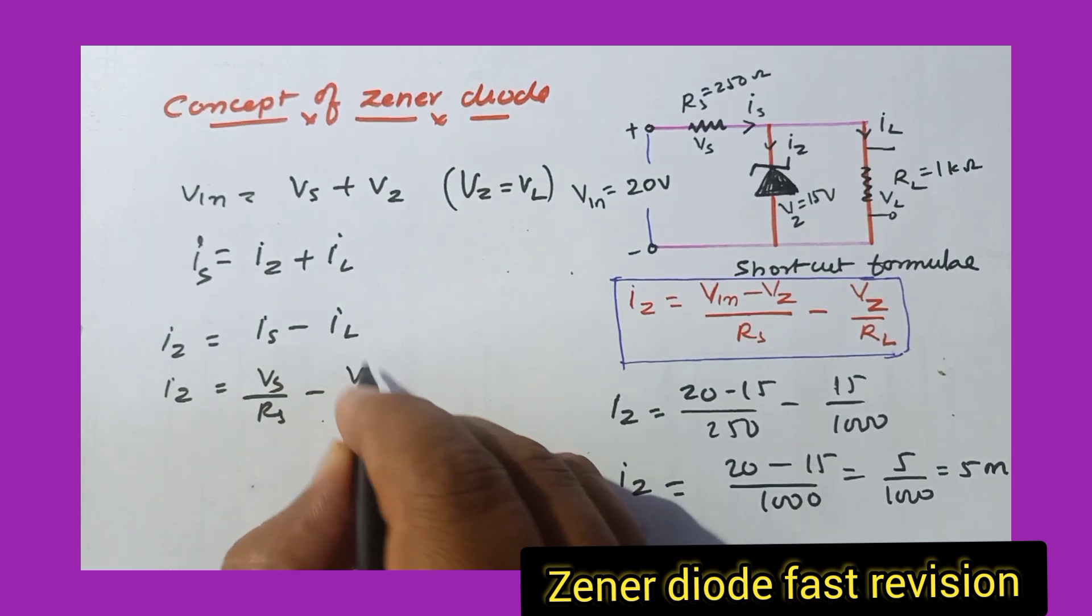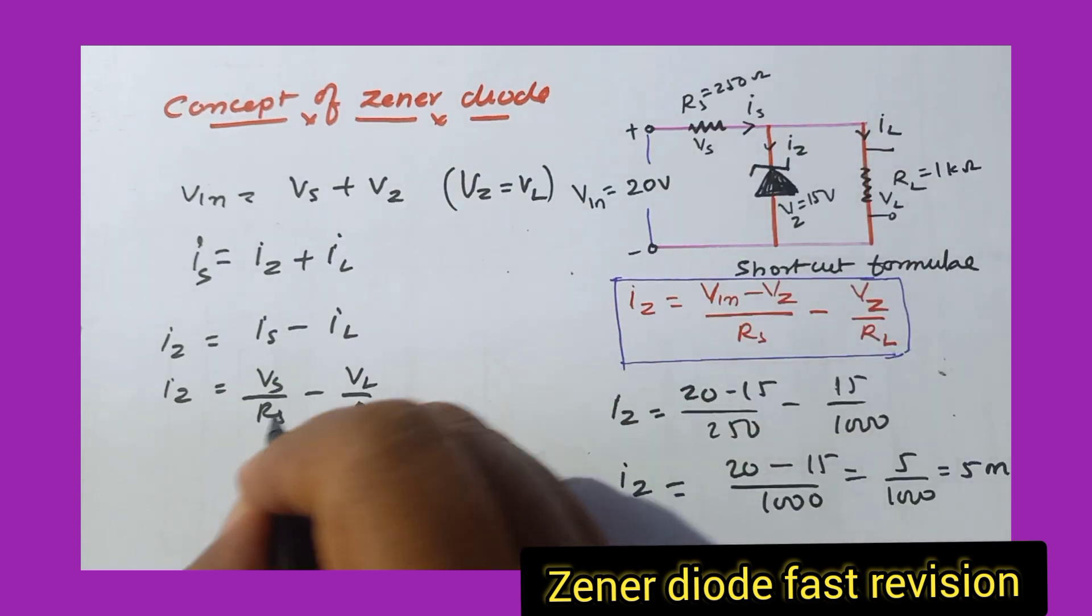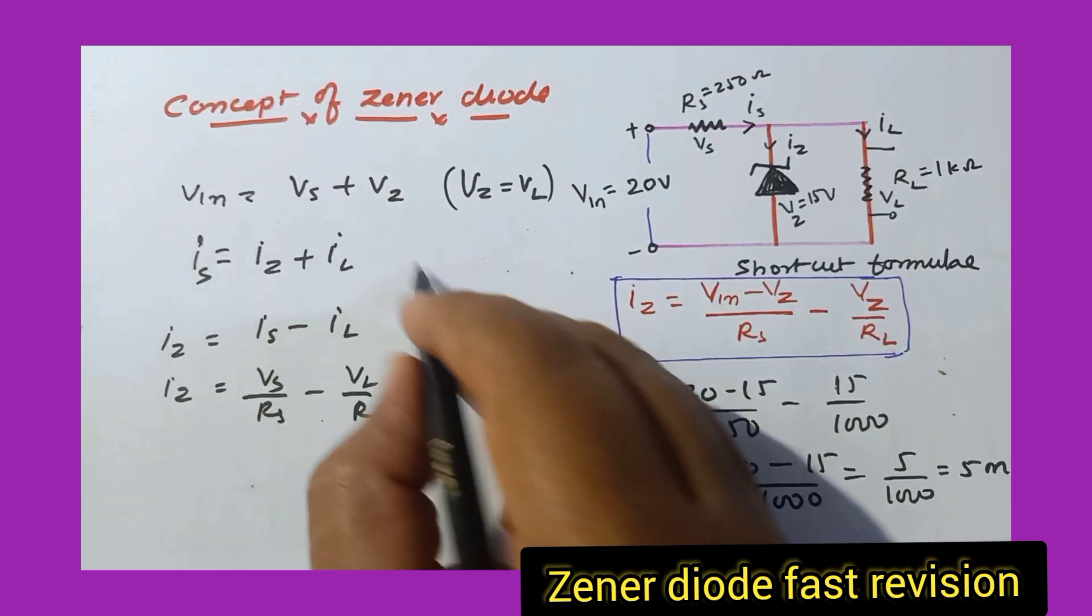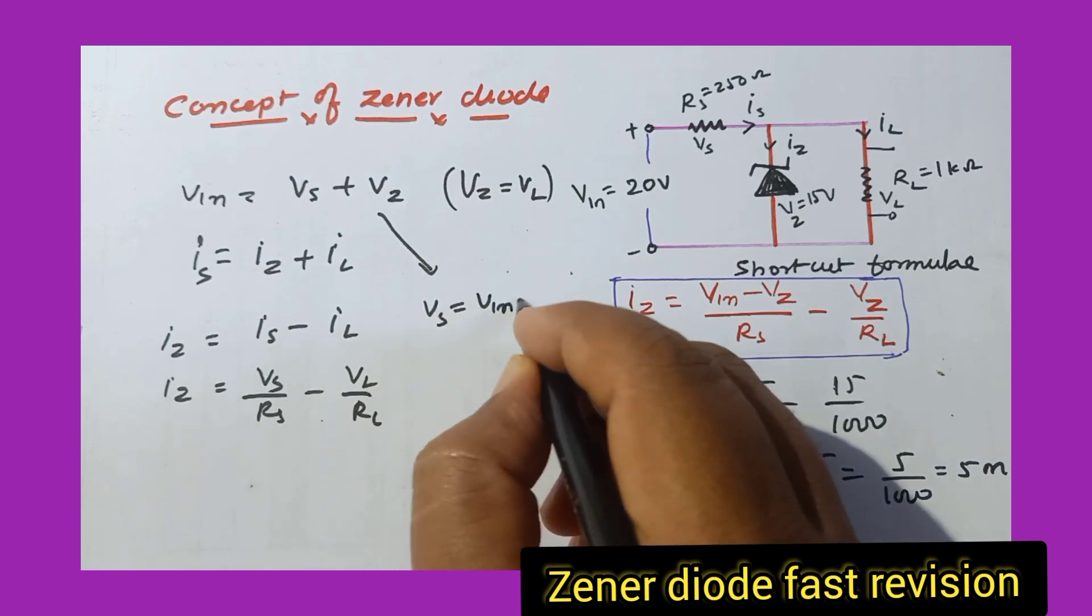So after that, we can also write Il as Vl voltage across the load resistance by resistance across the load resistor. So like this, if you write and you also know that here, if you want to find out Vs, you can find out Vs as Vin minus Vz. That's it.